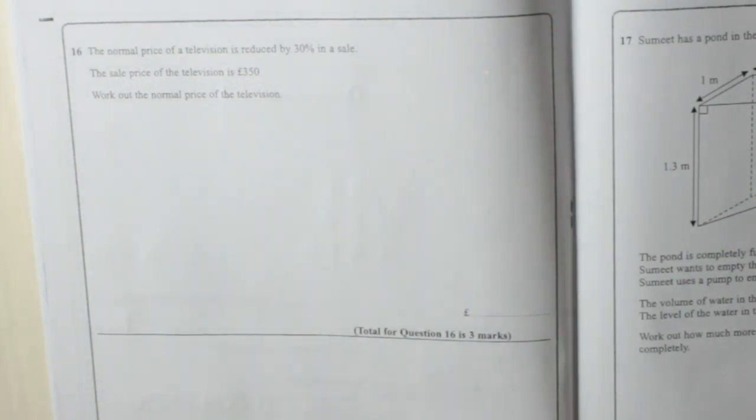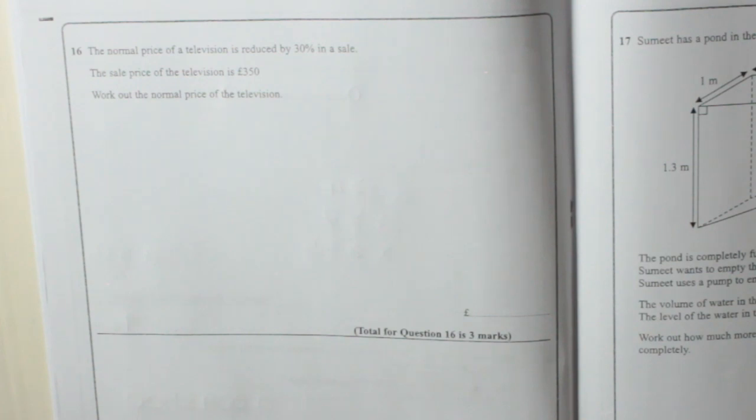Question 16. The normal price of a television is reduced by 30% in a sale. The sale price of the television is £350. Work out the normal price of the television.